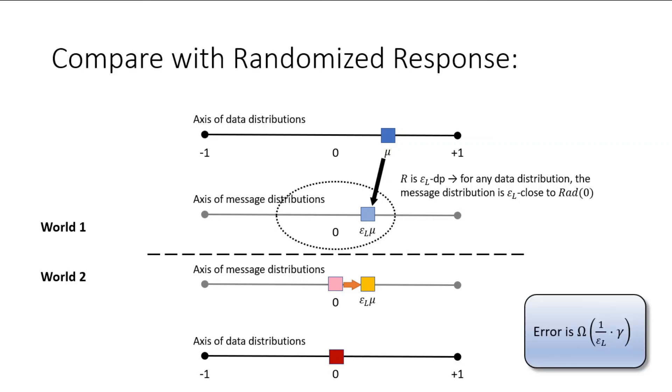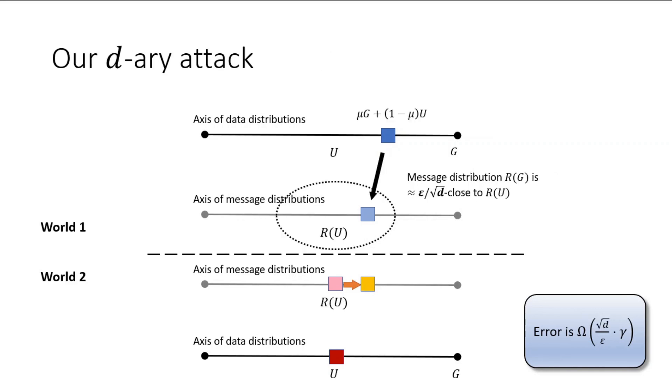This construction directly parallels the randomized response construction, where if the closeness is epsilon l, then the error is 1 over epsilon l. Now, back to our high-dimensional attack, this epsilon l term is actually epsilon over root d, so now our error has this root d term.